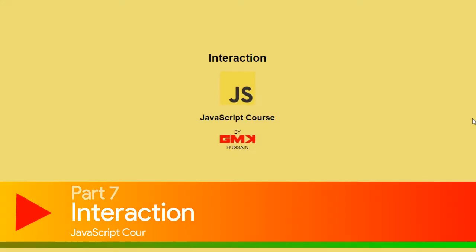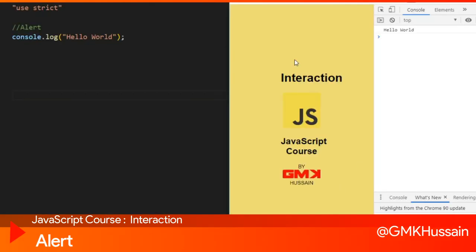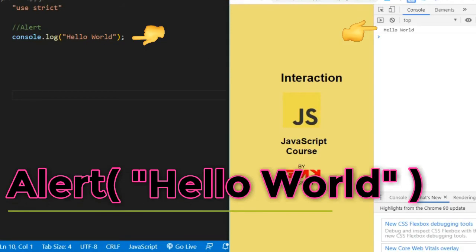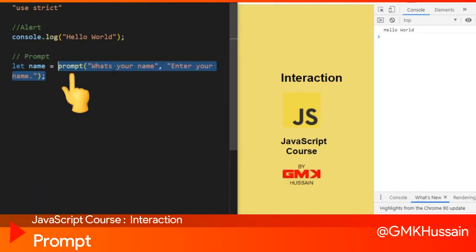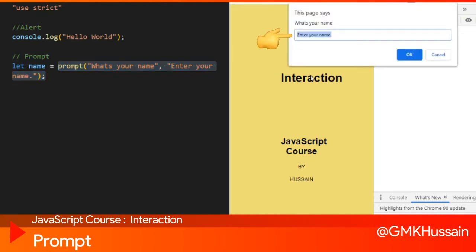Welcome to the JavaScript course series on browser interaction. Let's get started. The first one is alert — console log 'hello world'. The second one is prompt: set name equal to prompt, which will ask for your name. Enter your name and it will ask you to type it.